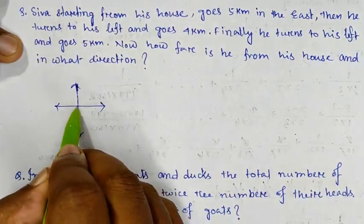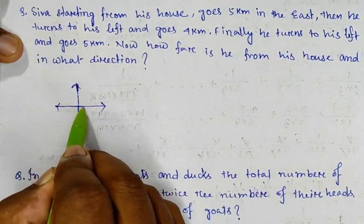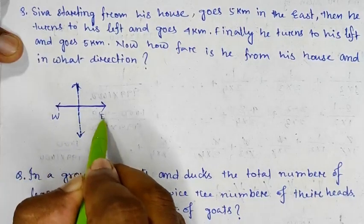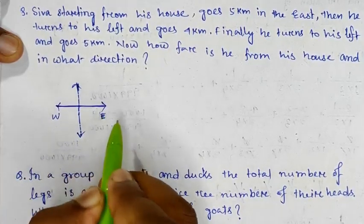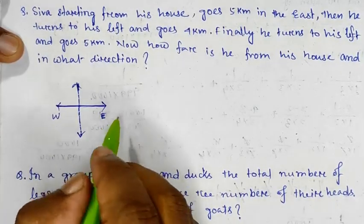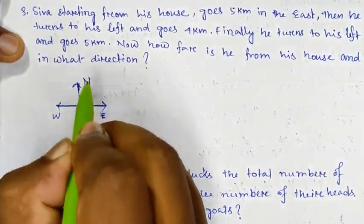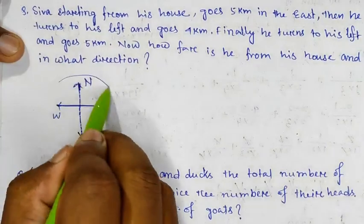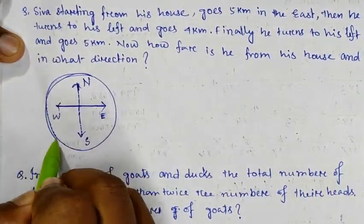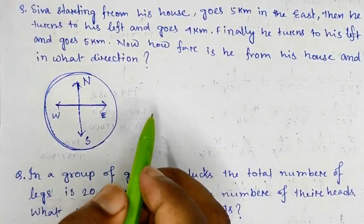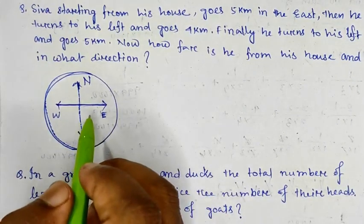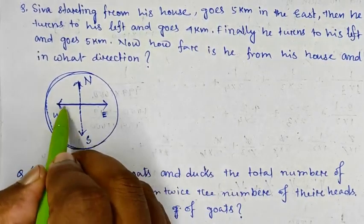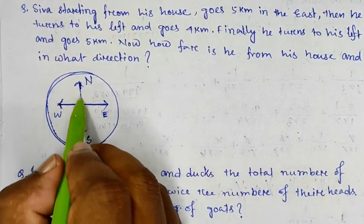Looking at the direction: right corner, left side and right side. This is the way — going north. The north direction leads to south, and this is how the path goes north, in the direction of west and south.